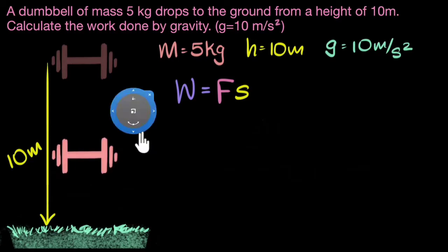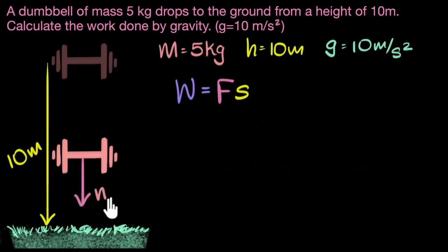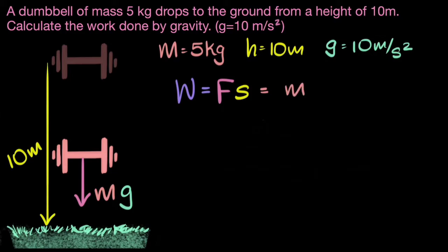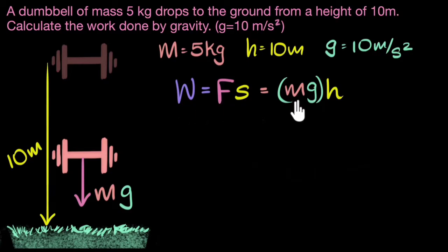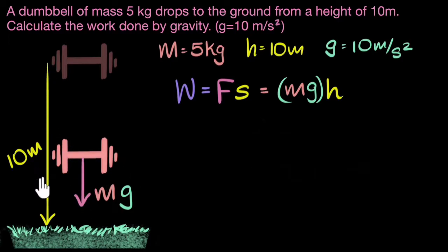The force of gravity on any object is mass times g. Now one thing we need to be careful about is that work done can be both positive and negative. It's positive when force and displacement are in the same direction, and negative if they're in opposite directions. In our example, the force is acting downwards and the displacement is also downwards, so the work done is going to be positive.